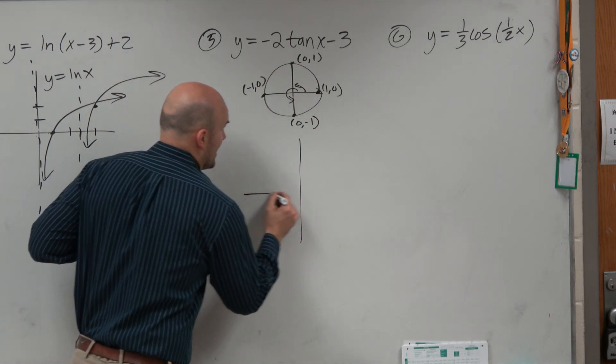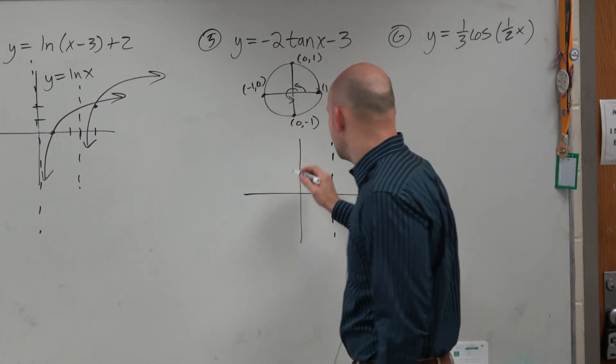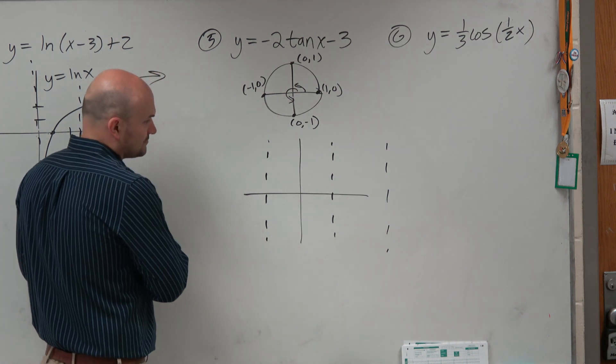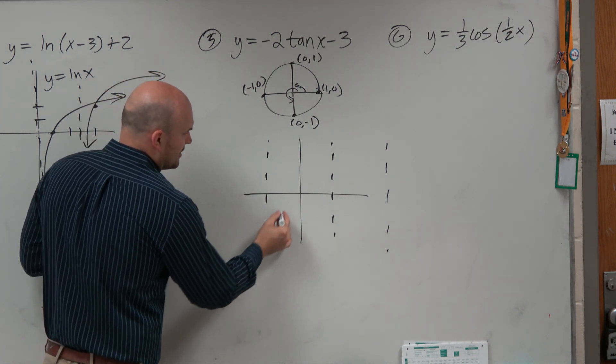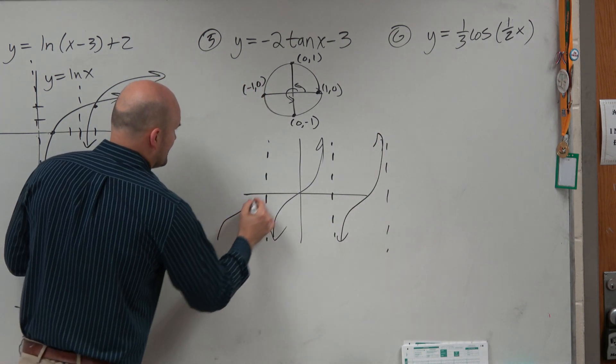So that reminds me of my graph. I have an asymptote at pi halves, or as you looked at it, negative pi halves. And this one's at 3 pi halves. And then hopefully you guys remember what the graph looks like. It looks something like this. So what you guys can see here is, again, I'm just doing a rough sketch of the graph.